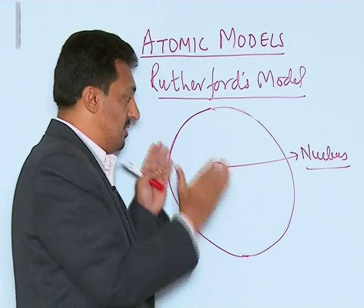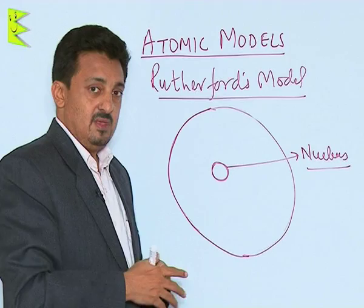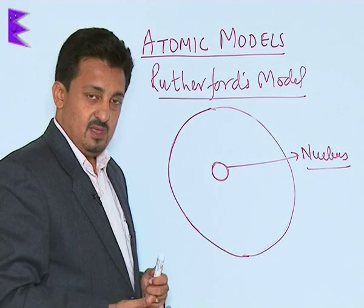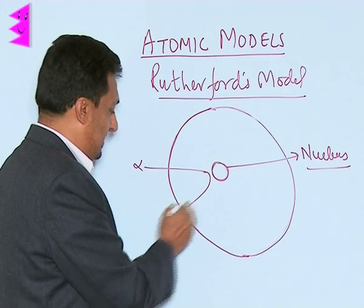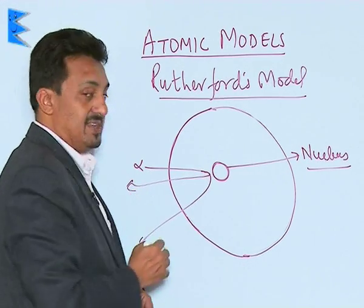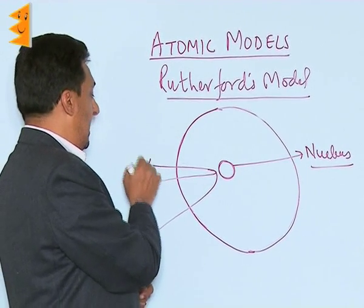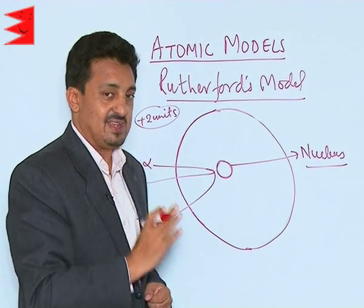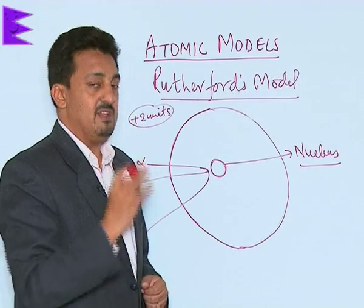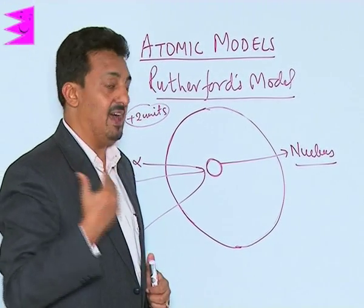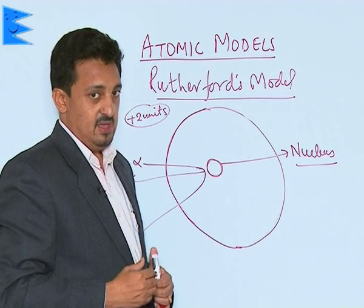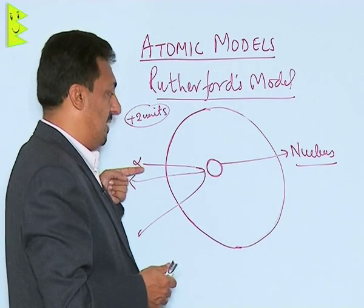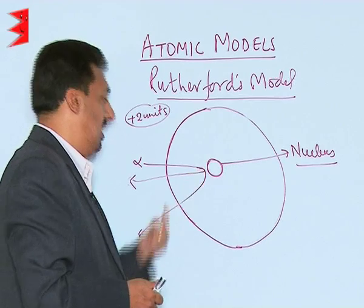Why did he conclude this? Because most alpha particles passed through the thin gold foil without any deflection, meaning most of the atom is empty. The alpha particles that were deflected by small or large angles were deflected because alpha particles carry a charge of +2 units — a positively charged particle is deflected by another positive charge. So the whole mass and positive charge must be concentrated in a very small space called the nucleus.